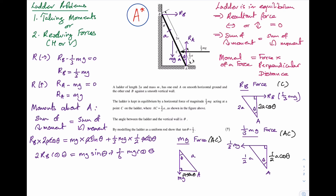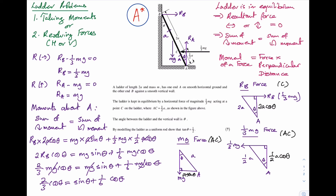Since RB equals 1/3 mg, we replace RB to get 2/3 mg cos theta equals mg sin theta plus 1/6 mg cos theta. The mg's cancel, giving 2/3 cos theta equals sin theta plus 1/6 cos theta. Making sin theta the subject gives sin theta equals 1/2 cos theta. Dividing both sides by cos theta gives sin theta over cos theta equals tan theta equals 1/2. Hence tan theta is equal to 1/2, as required.